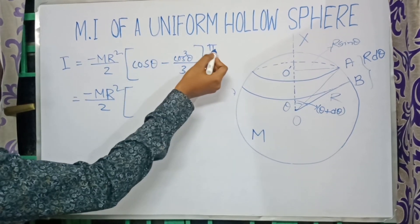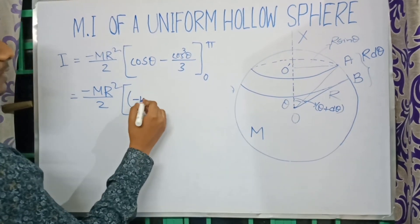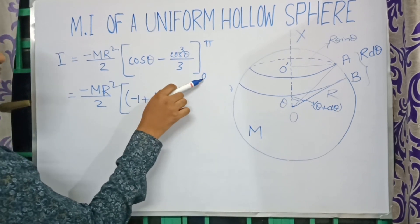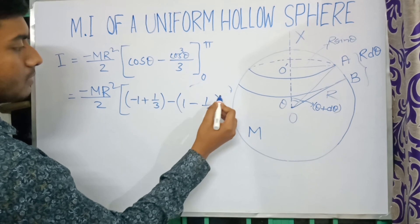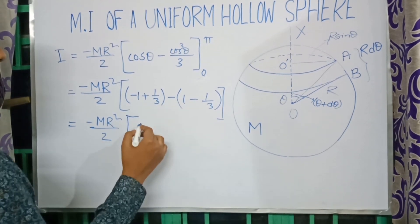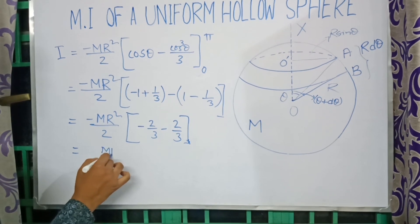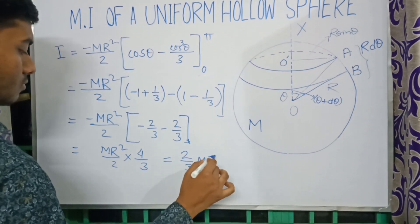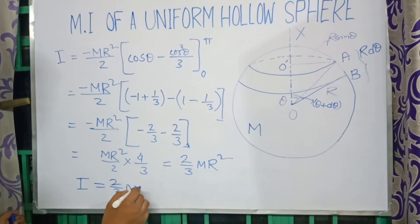Putting in the limits: cos(π) = −1, so the upper limit gives (−1 + 1/3), and cos(0) = 1, so the lower limit gives (1 − 1/3). After evaluating and simplifying, multiplying by −(MR²/2), we get the moment of inertia of the whole body: I = (2/3)MR².